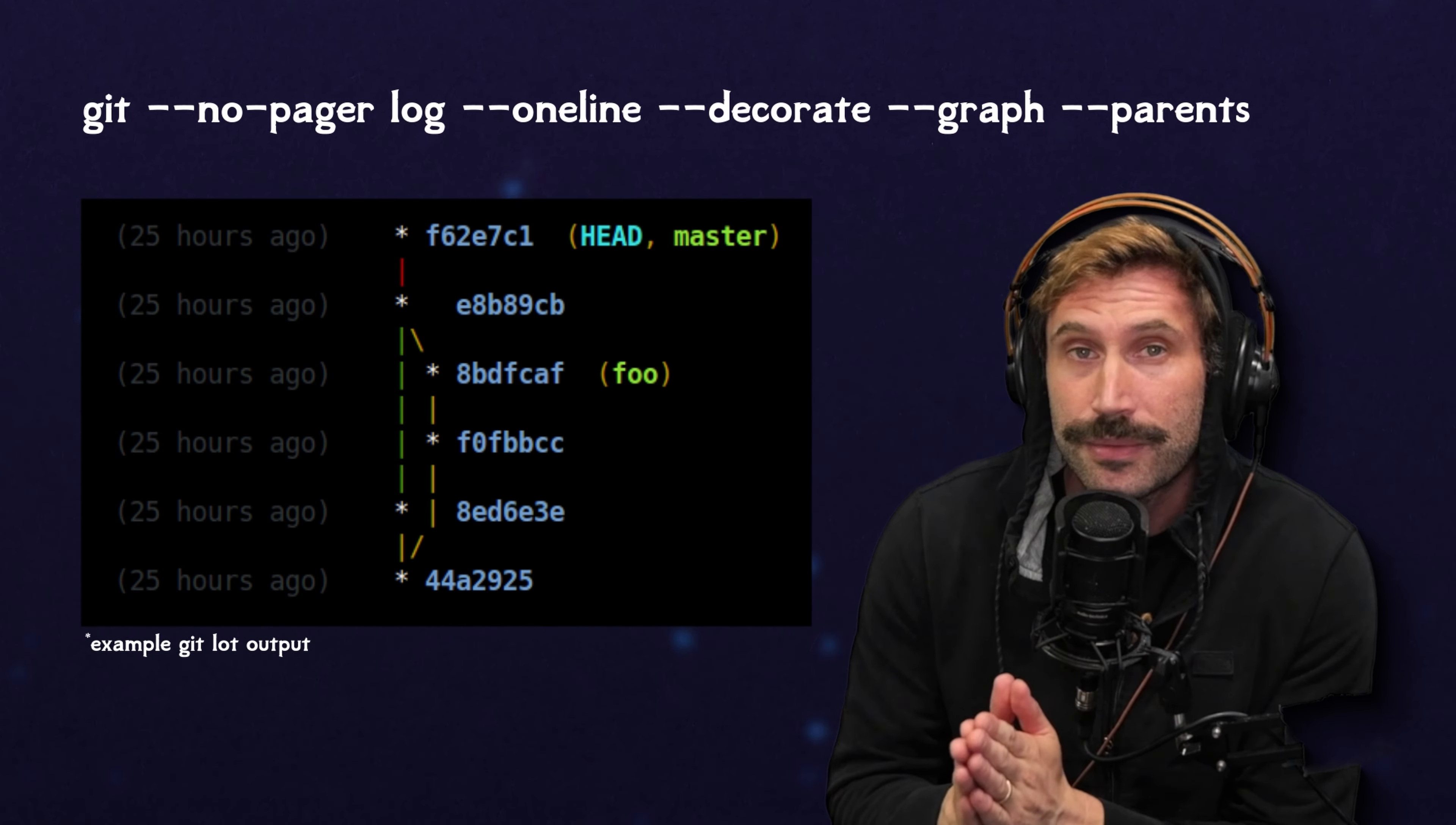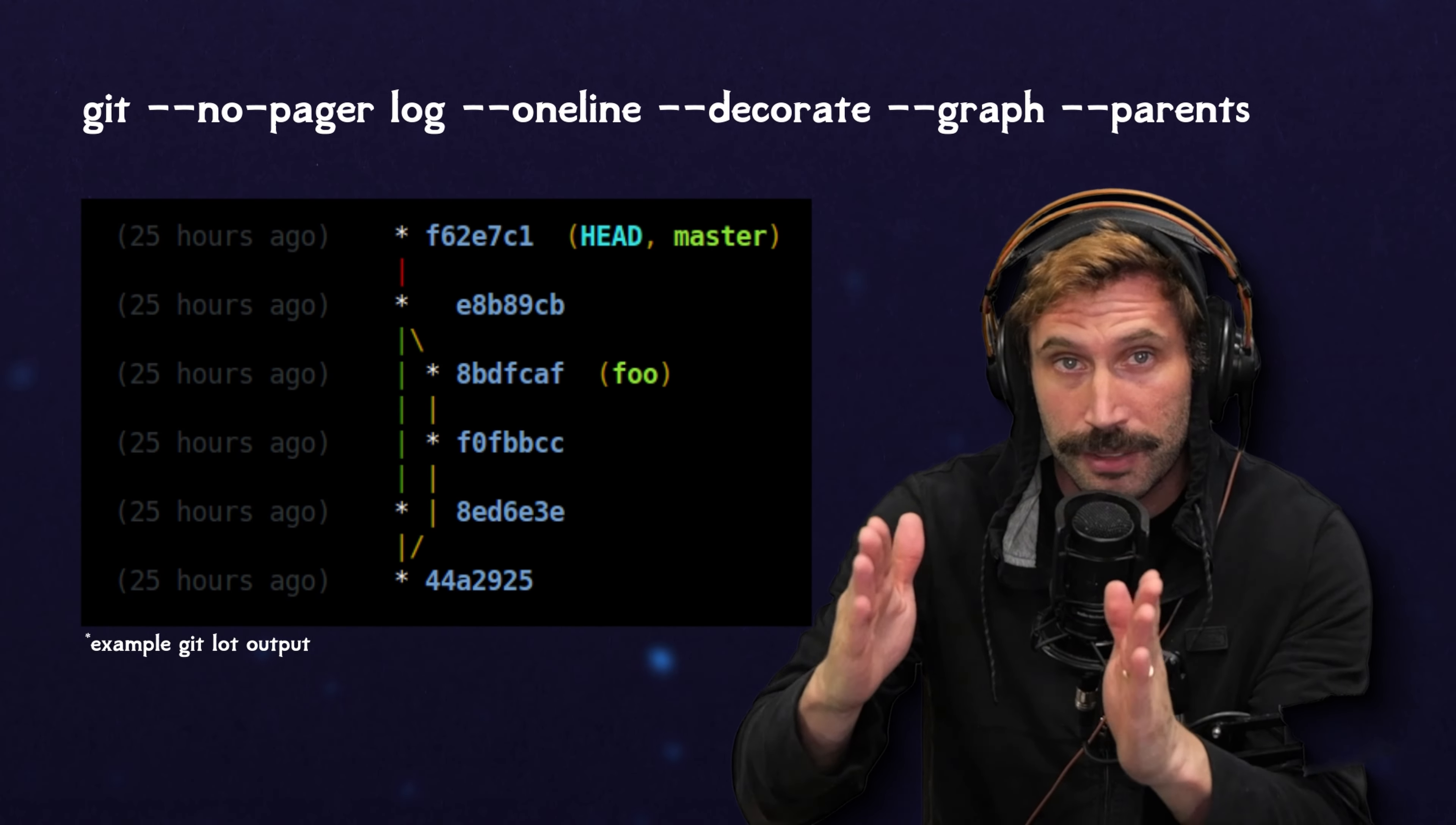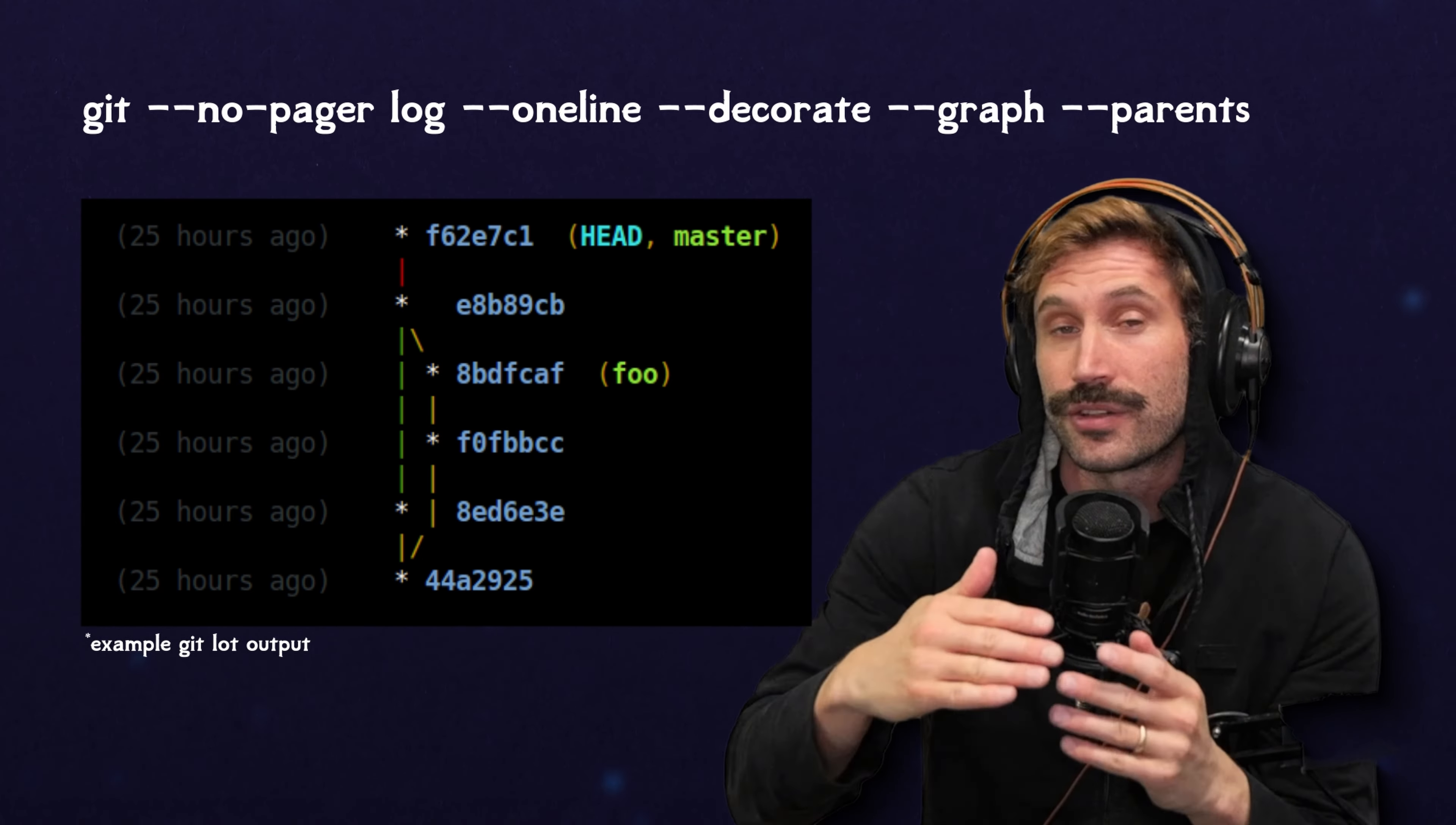If you use git log, you'll actually be able to see the diverging from A, the two diverging commits, and then the coming back together in F.